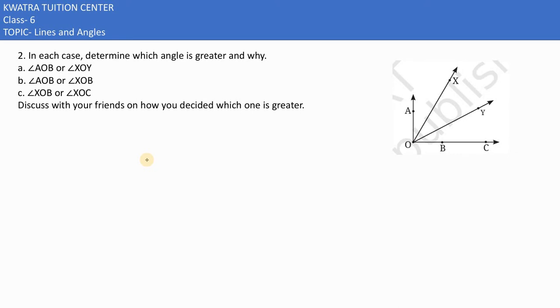Now in the next one it says in each case determine which angle is greater and why. Here we have given the first situation: angle AOB and angle XOY. Now we are asking which one is greater. AOB is this one, XOY is this one. So I can clearly see that angle AOB is greater than XOY. But what is the reason?